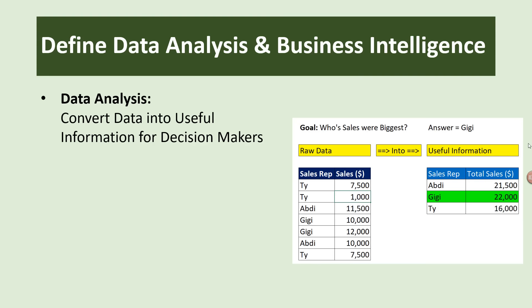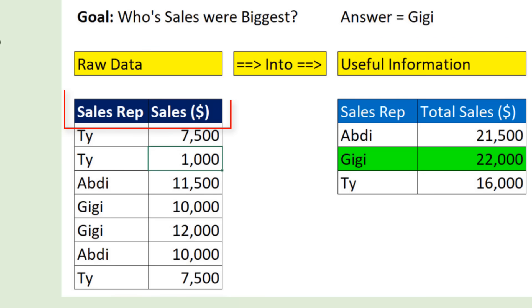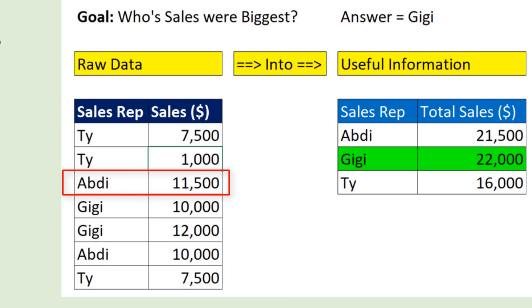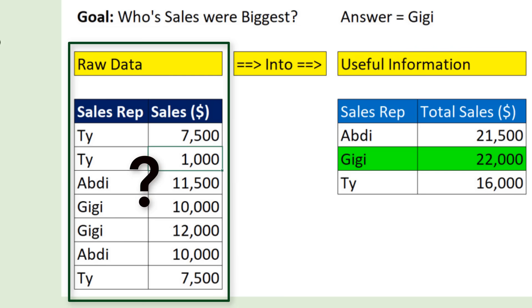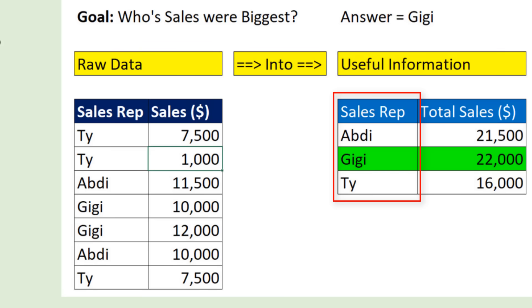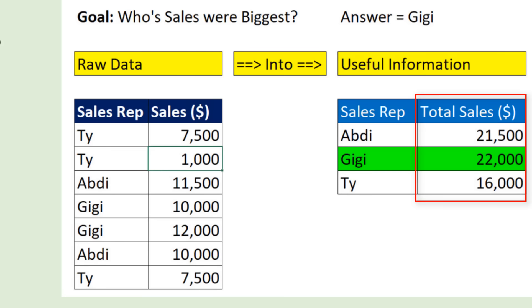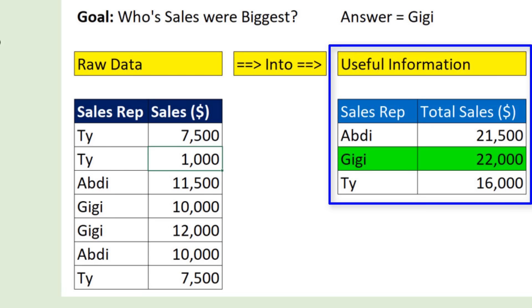Here's a simple example. We have two columns: sales rep and sales. The first record shows sales rep Ty had sales of 7,500. The third record shows ABD sales rep with sales of 11,500. That's the raw data. But if our goal is to determine whose sales were biggest, the raw data alone won't give us the answer. We have to convert that raw data into useful information — we first create a unique list of sales rep names, then we add the sales for each sales rep. Now we can answer our question. The answer: GG.